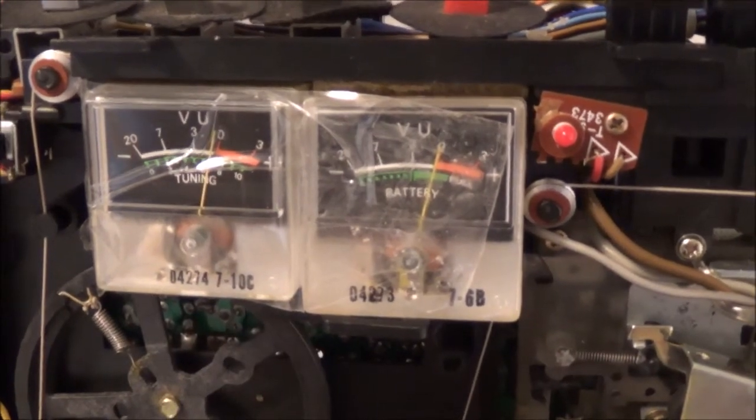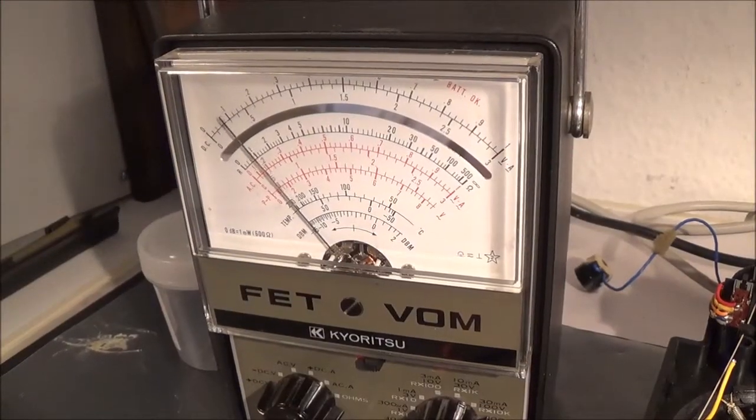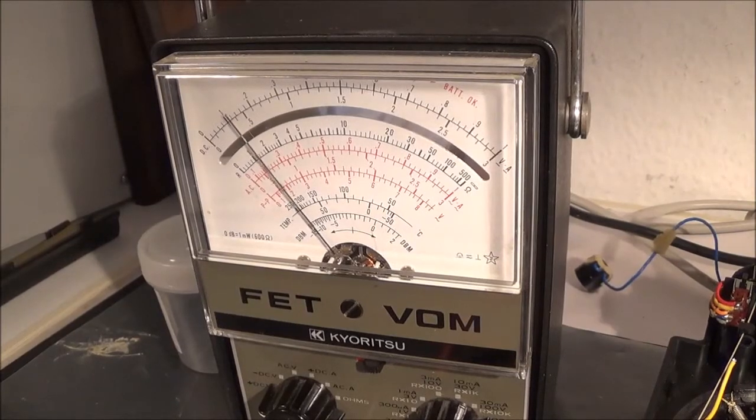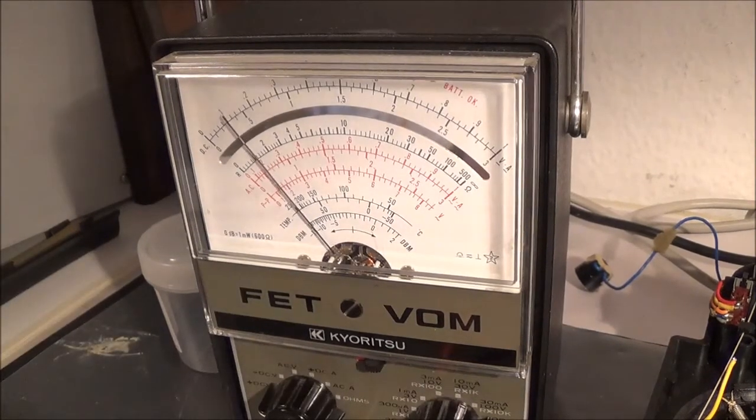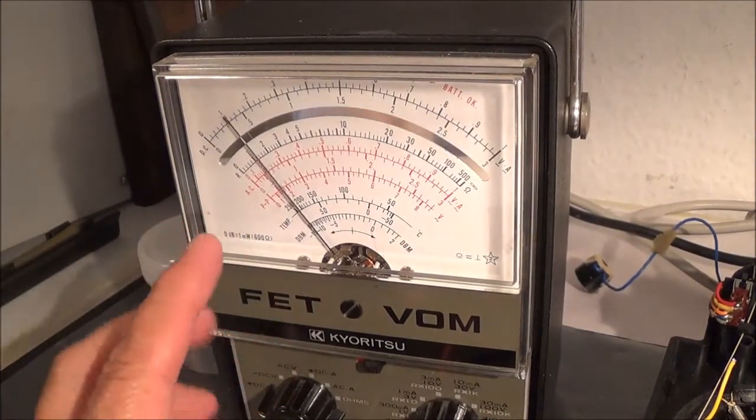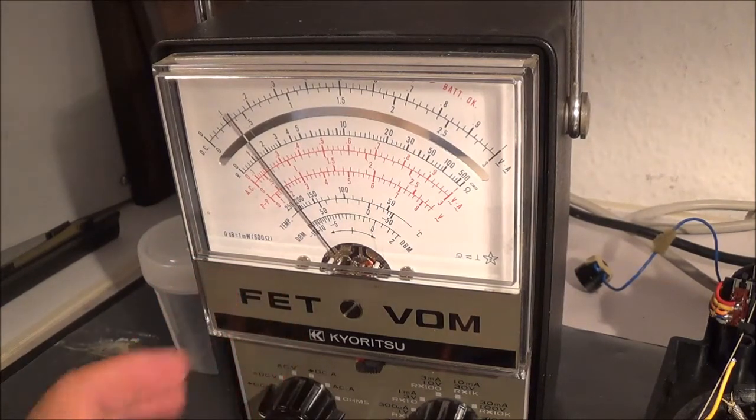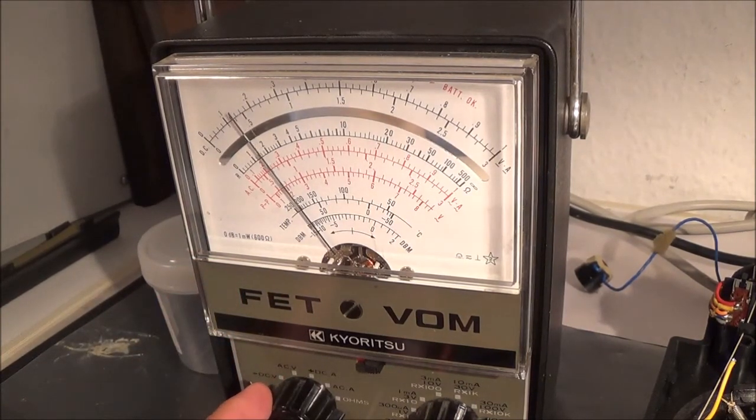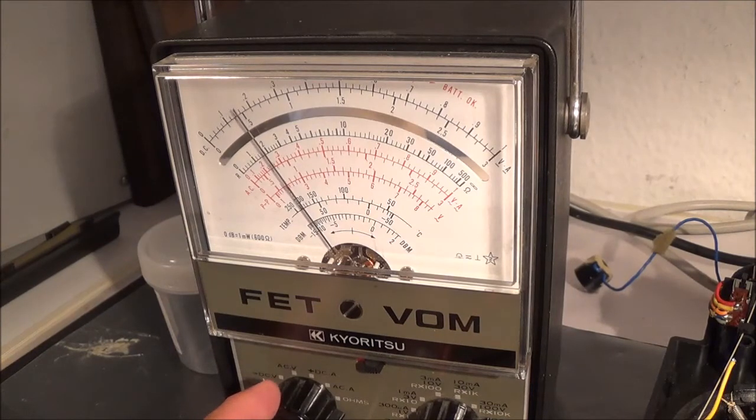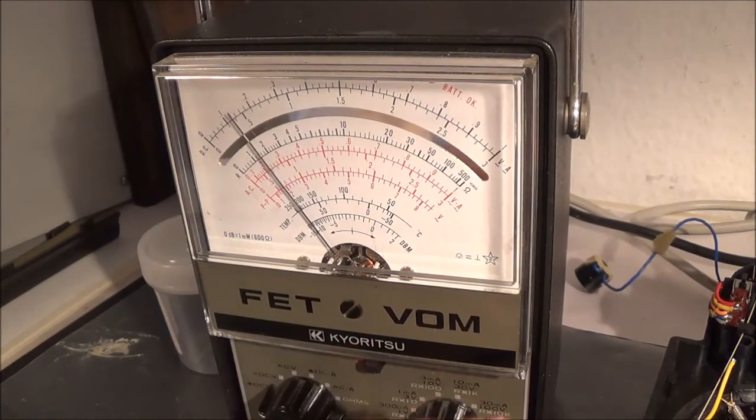But let me get back to what I was actually going to show. Now here's what I did in order to check the meter out while it was in circuit. I simply hooked up my old analog VOM meter. I put it in the DC position here because the signal is actually rectified.